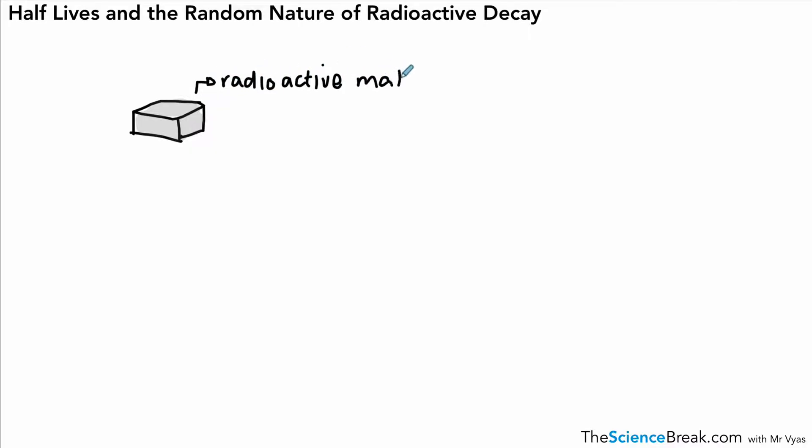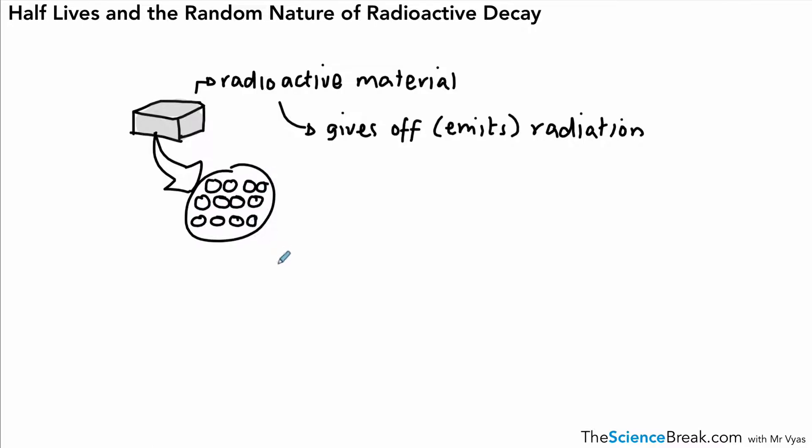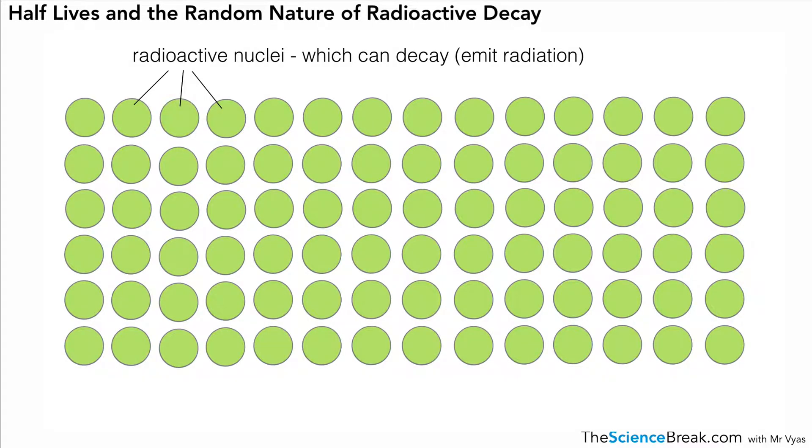This is a radioactive substance or radioactive material. If we were to look at the atoms of it, we would see that the nuclei of those atoms give off or emit radiation, either alpha, beta, gamma, or even neutrons. We could sketch out those nuclei very quickly, but we could do it a little bit more tidily like this.